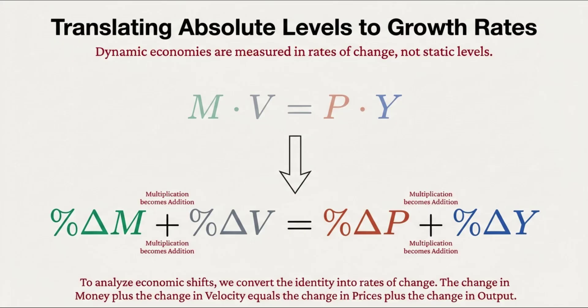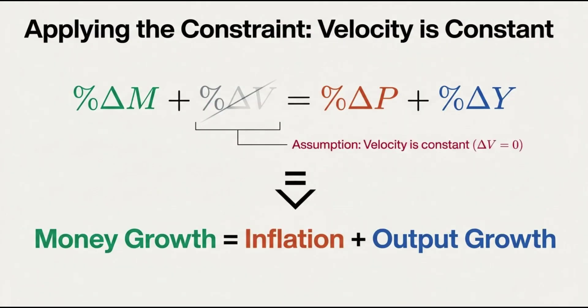The other side is the total value of all the transactions — what that spending actually bought — and that is also made up of two factors. First, you have the price level, P — the average price of everything in the economy. The second factor is real output, Y — the volume of actual goods and services produced. Not the dollar value, but the number of cars, the number of haircuts, the amount of software written. It's what we often measure as real GDP. So P times Y gives the total dollar value of everything sold. And because every dollar spent has to be a dollar received, M times V must equal P times Y. It's just accounting.